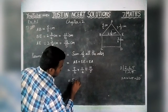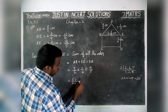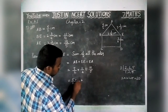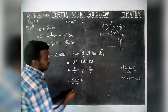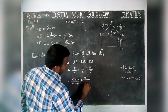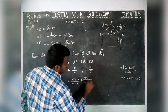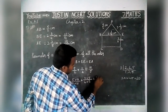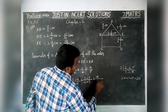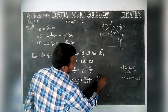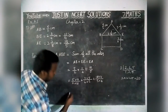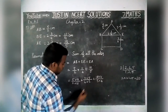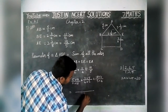For 5/2, multiply by 10/10 to get a denominator of 20. For 11/4, multiply by 5/5 to get 20. For 18/5, multiply by 4/4 to get 20. Now all denominators are the same, so we take the common denominator of 20.